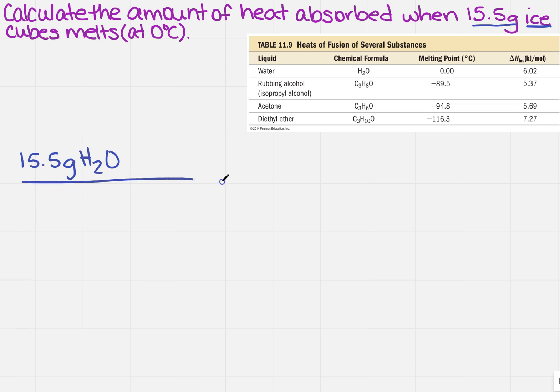Now remember, if you don't know what to do, what's the first thing you always convert to? Moles. So in one mole of H2O is how much? We go to the periodic table and we find 18.02 grams of water.